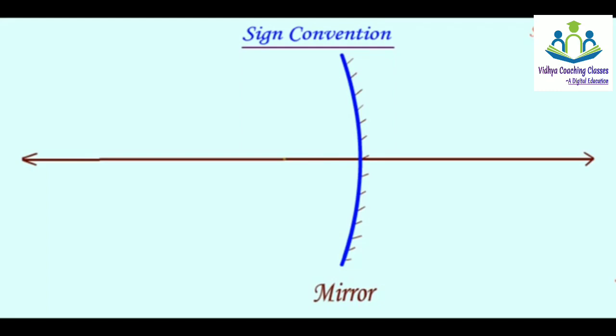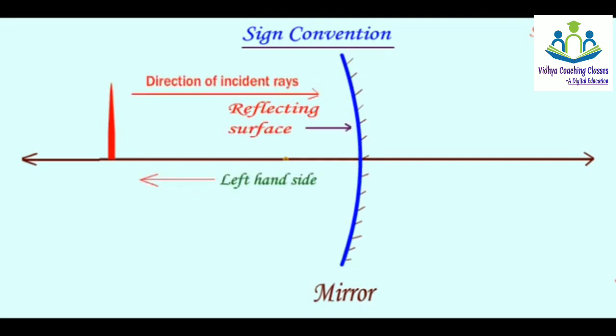As you can see on the screen, this is a concave mirror. While dealing with the reflection of light by spherical mirrors, we shall follow a set of sign conventions. In this convention, the pole P of the mirror is taken as the origin. Here, we take the pole as the origin.